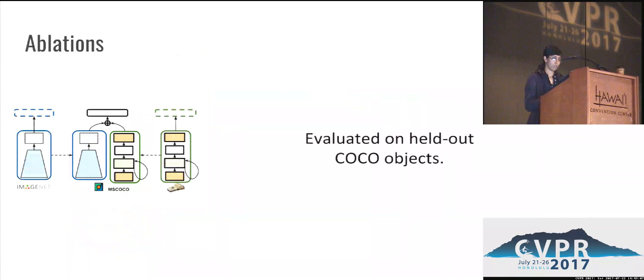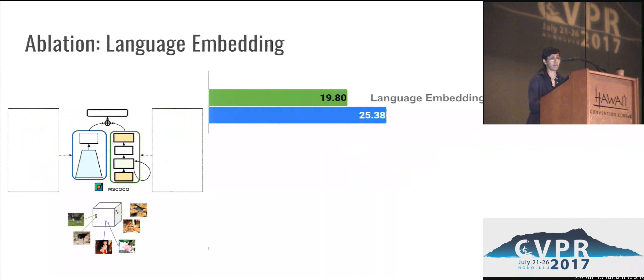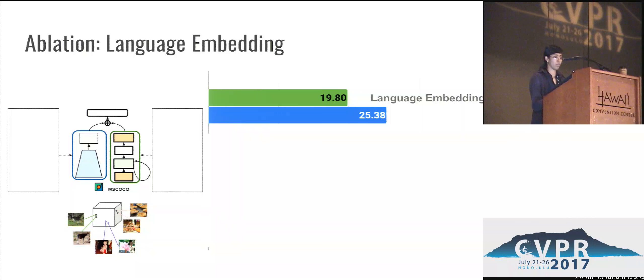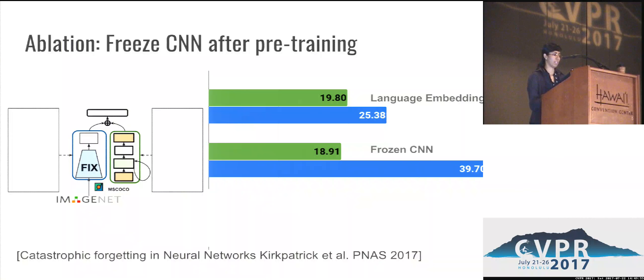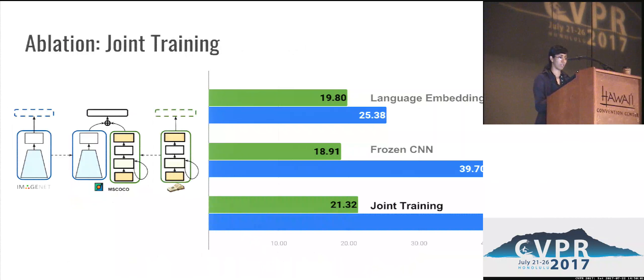Let's look at which aspects of our model provide the performance boost, evaluated on held-out COCO objects. When we use only the semantic embedding in our language model, our captioning model is still able to recognize and generate descriptions for held-out object categories, as seen by the reasonably good F1 and Meteor scores. An interesting finding was that when we froze the CNN trained on images and labels, the F1 score improved considerably — again relating to the forgetting problem, since once the model is fine-tuned it tends to forget. But when frozen, it is able to recognize these objects. Jointly training all networks together on the different data sources gives us the best performance.